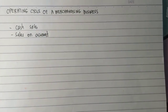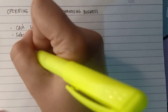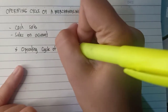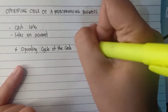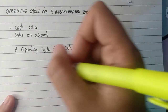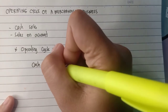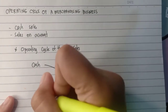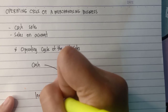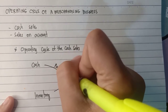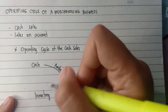In cash sales, the cycle is from cash to inventory and then back to cash. Here is the operating cycle of the cash sales. First we have cash, and it will be converted into inventory because we purchase inventory using our cash — so the cash becomes inventory.